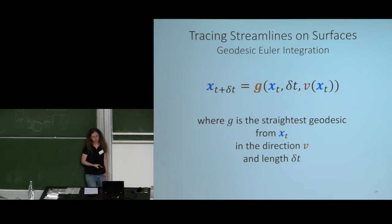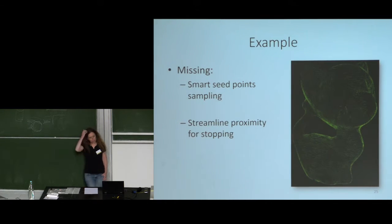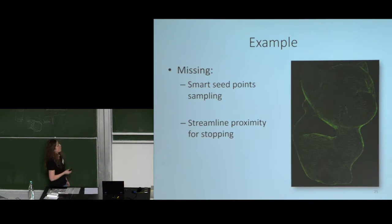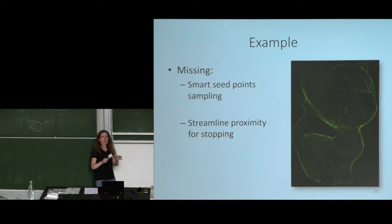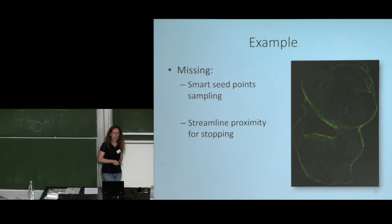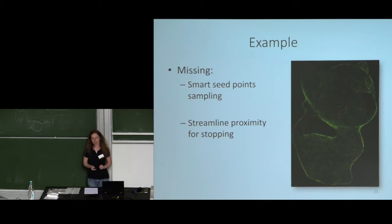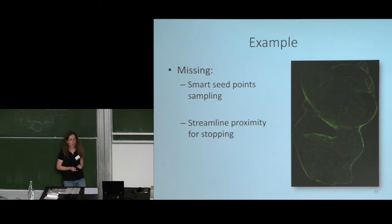A nice approach is to use straightest geodesics instead: find a path such that the sum of angles on both sides of the path are equal. For this condition, you can show that there always exists a unique solution. Now you can plug straightest geodesics into the streamline tracing algorithm exactly like before, and you are guaranteed to always have a solution and be able to trace the flow. For the evenly spaced seeding and stopping criteria, you also need machinery for quick intersection tests on surfaces.